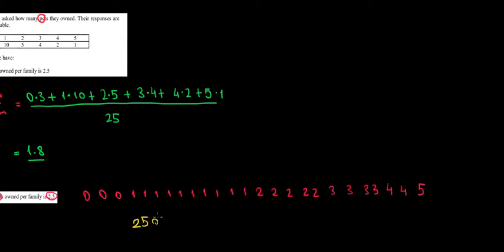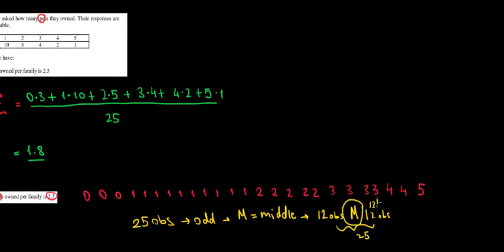We have 25 observations which is an odd number meaning that the median is going to be the middle observation exactly. We're going to have 12 observations, the median, and another 12 observations. So in total 25 meaning that the median is the 13th observation.